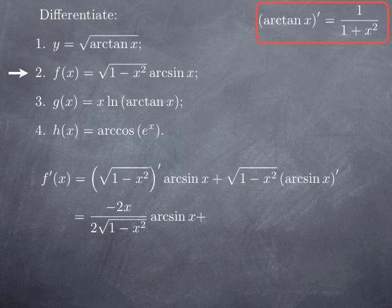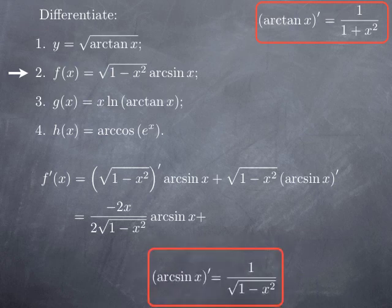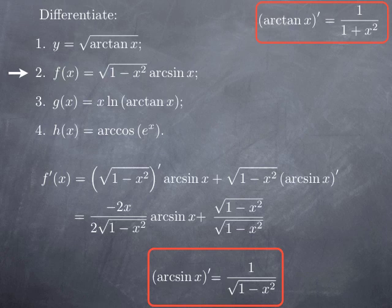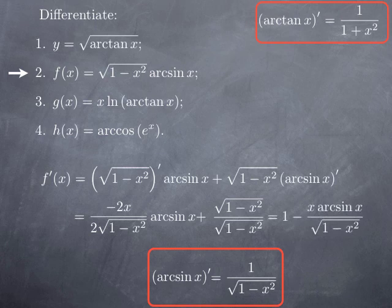For the second term, we need the derivative of arcsin, which is 1 over square root of 1 minus x squared. So the second term gives us square root of 1 minus x squared over itself, which simplifies to 1. The first term's 2 cancels out, and we end up with 1 (from the second term) minus x·arcsin x divided by square root of 1 minus x squared.